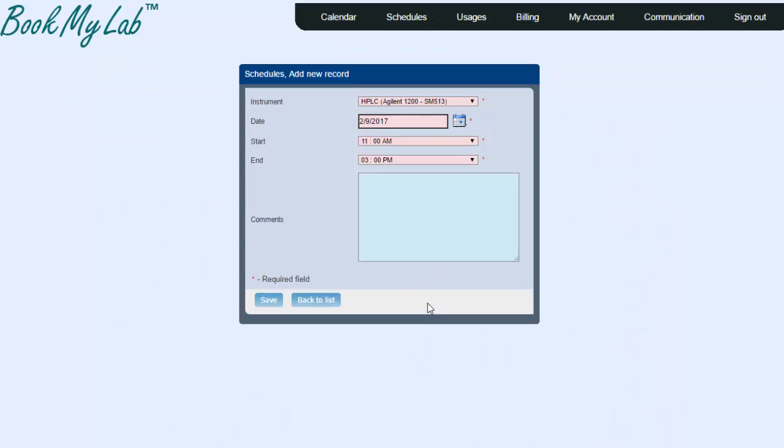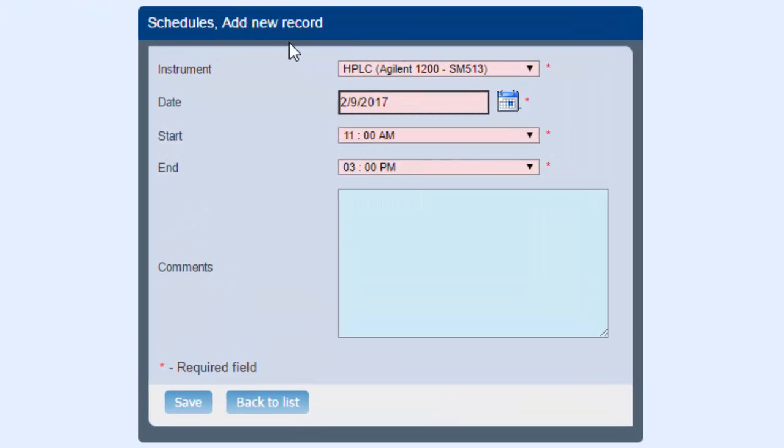That'll bring you to a page that says Schedules Add New Record. At this point you can confirm that the instrument choice is correct, that the date is correct and that the start and end time of your reservation is correct. If you are a student user, in the comments section please add the last name of your faculty advisor and then click save.